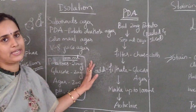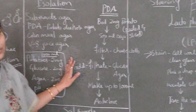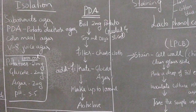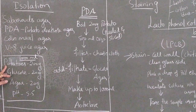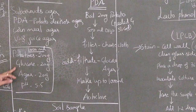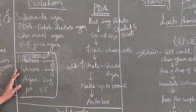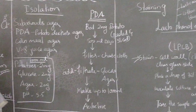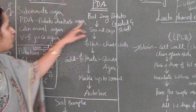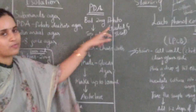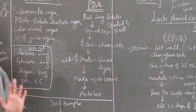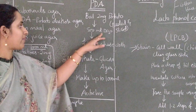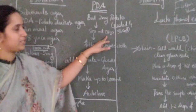Now we will see about PDA — potato dextrose agar. To prepare PDA medium, we require only three ingredients: potatoes, glucose, and agar. Boil 200 grams of peeled and sliced potatoes in 500 ml of distilled water. After boiling, filter the extract using a cheesecloth.